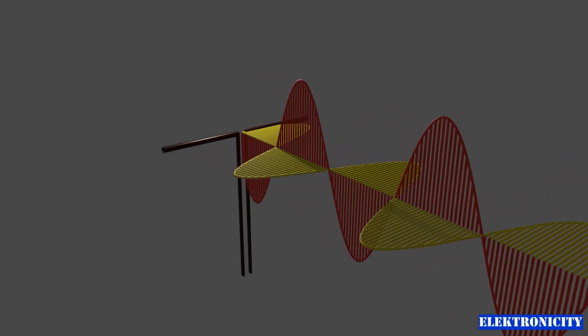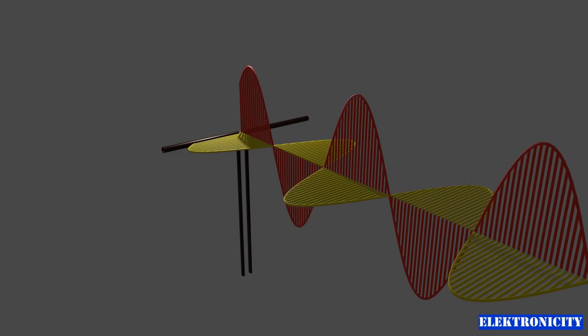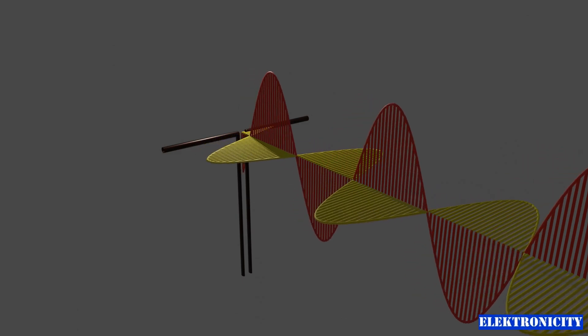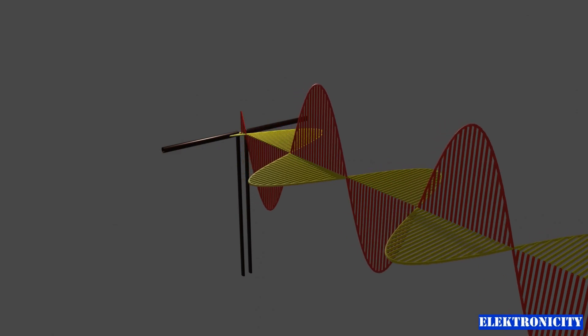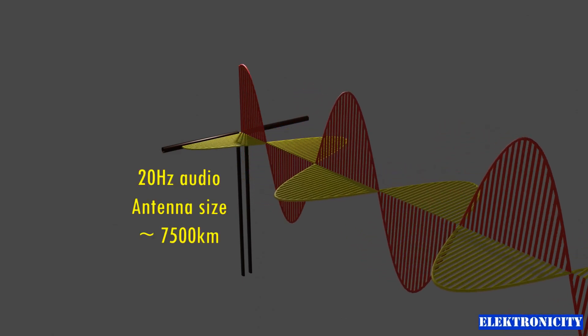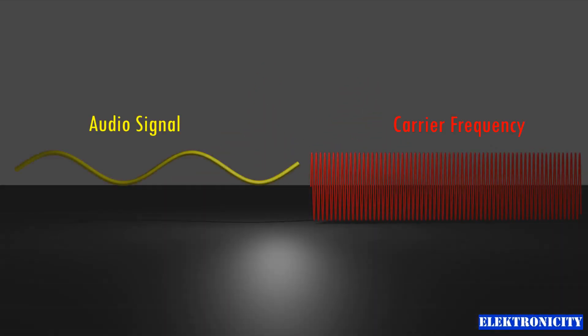For example, a quarter wavelength antenna size for a 20 hertz audio signal will be 7500 kilometers long. To overcome this, the audio signal is superimposed onto a high frequency carrier wave which is then transmitted.